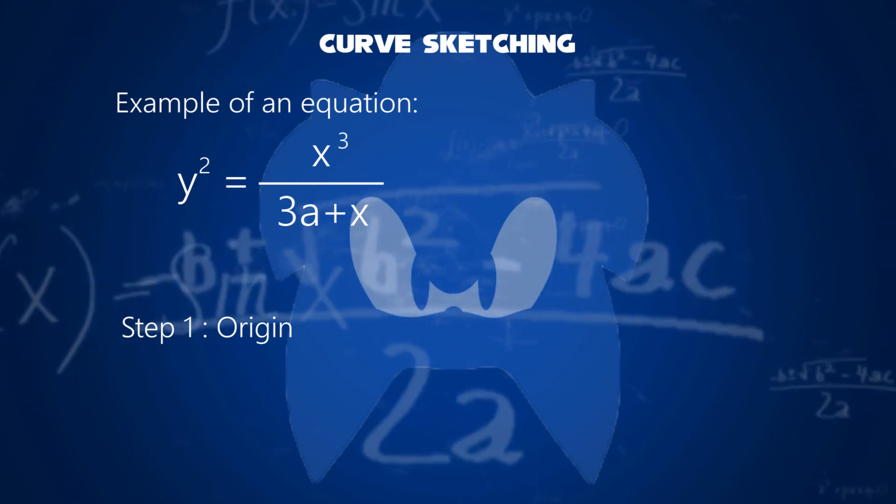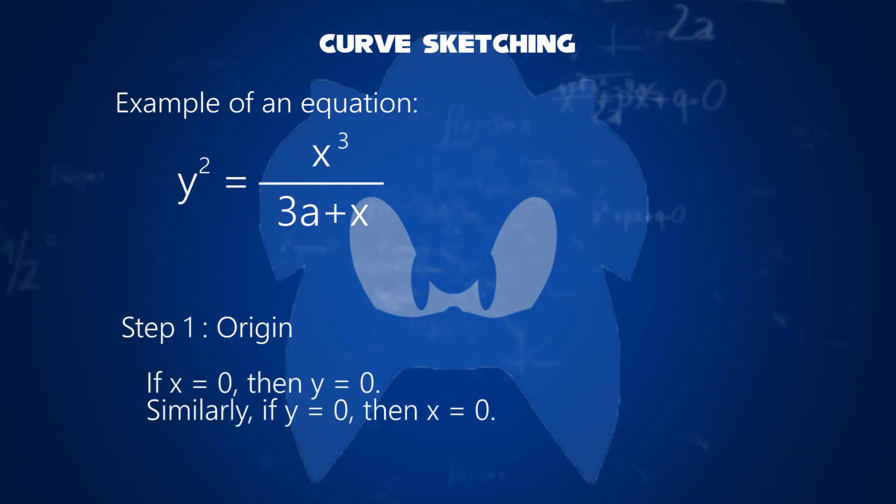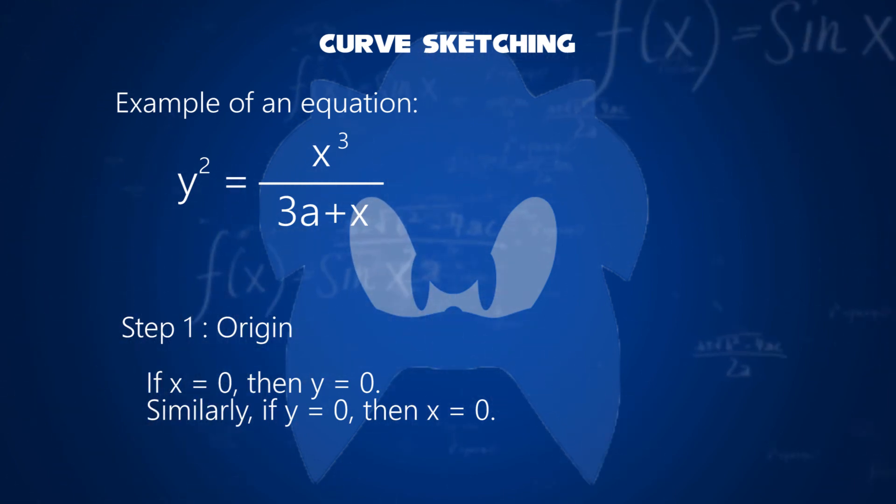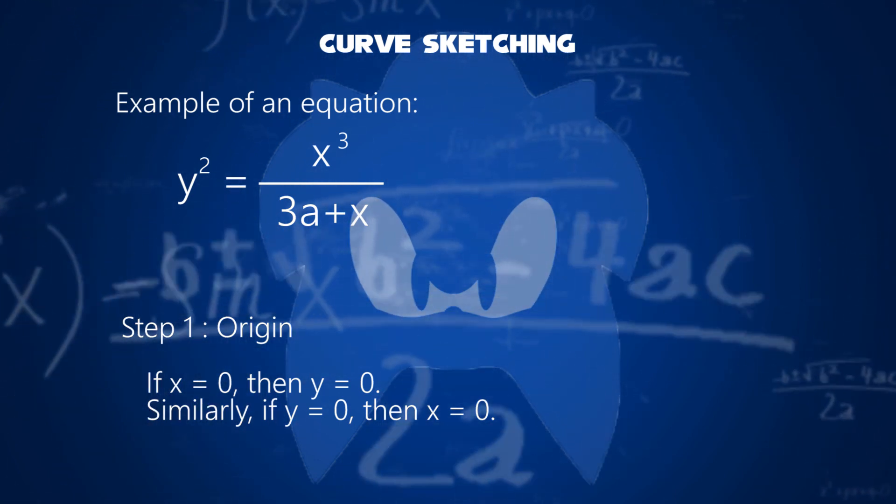First step, finding an origin. Take x equals zero, then y equals zero. Similarly, if y equals zero, then x is equal to zero. So this passes through origin.